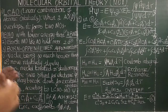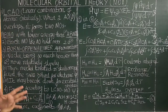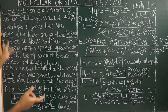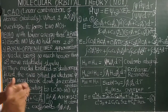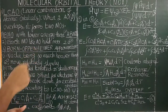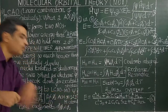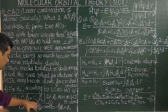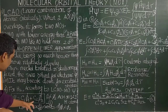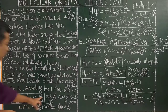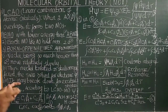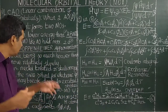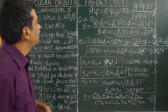For example, consider the homonuclear diatomic molecule hydrogen, the simplest molecule. When two 1s orbitals combine, they form two molecular orbitals: a bonding molecular orbital (σ1s) and an anti-bonding molecular orbital (σ*1s). According to LCAO, the molecular orbital is expressed as ψ = C₁φ₁ + C₂φ₂, where φ₁ and φ₂ are the atomic orbitals centered on the two hydrogen atoms, and C₁ and C₂ are their coefficients.